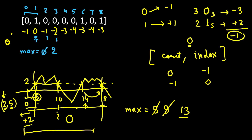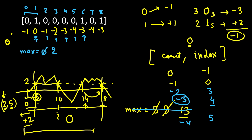We move to minus 2, which doesn't exist in the map, so we insert minus 2 at index 3. Then minus 3 at index 4, and minus 4 at index 5. Then we get minus 3 again — it exists at index 4: 6 minus 4 equals 2, not larger than max. Then minus 4 exists at index 5: 7 minus 5 equals 2, again not larger.